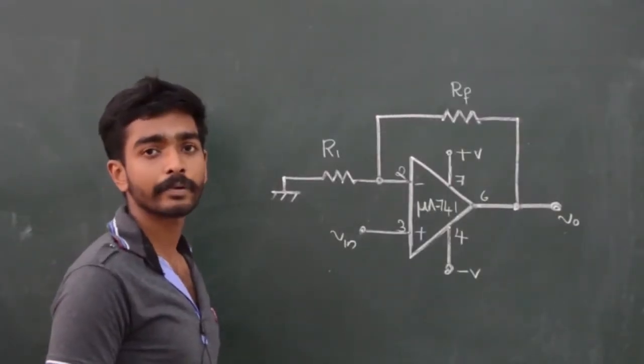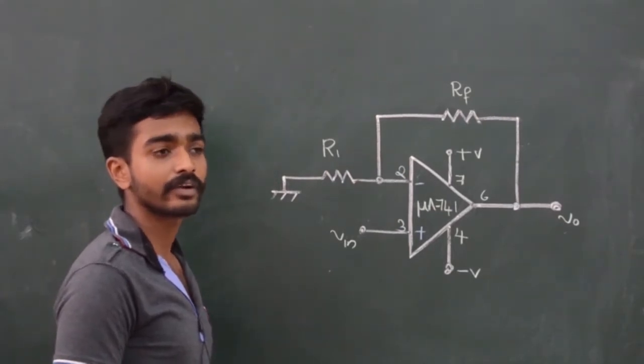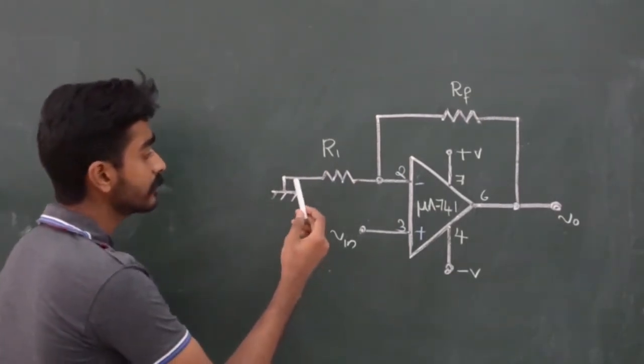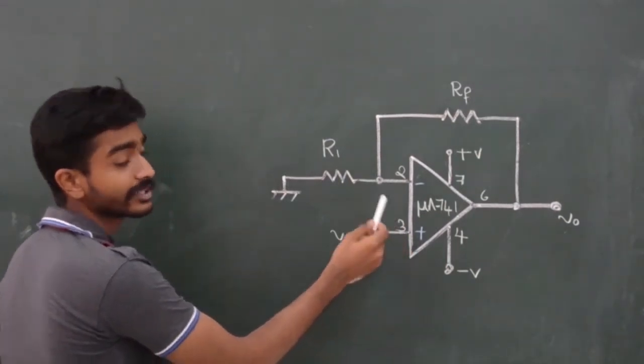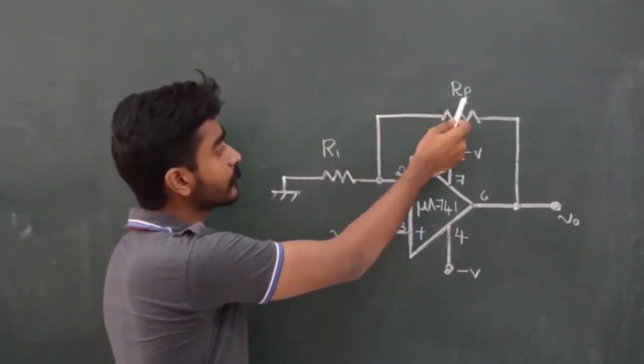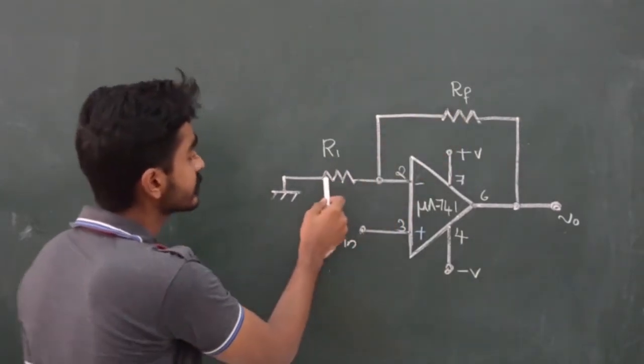This is the circuit diagram for an op-amp configured in non-inverting mode. The input is applied at terminal 3 which is the non-inverting terminal. Rf provides the feedback resistance and R1 is the input resistance.